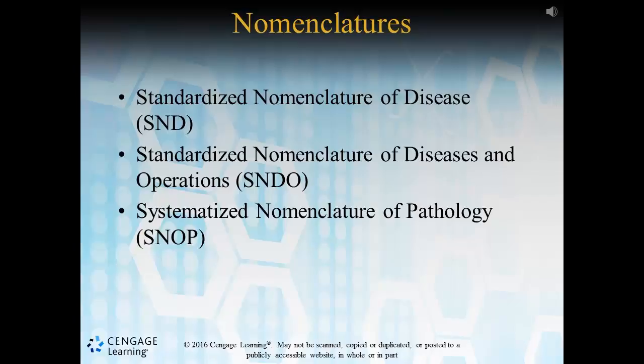The Systematic Nomenclature of Pathology was created in 1965 by the College of American Pathologists. This used a four-axis system with terms and codes most commonly used by pathologists.